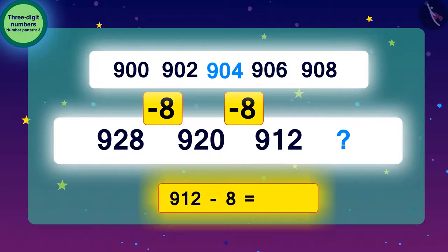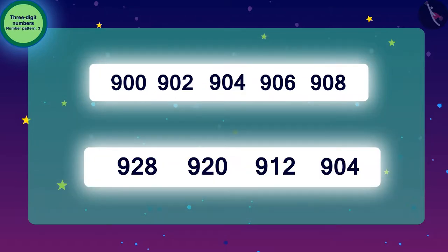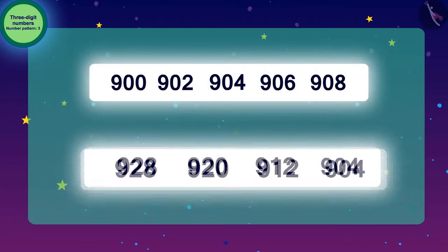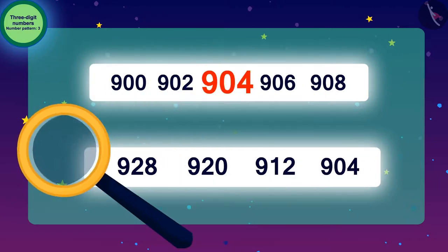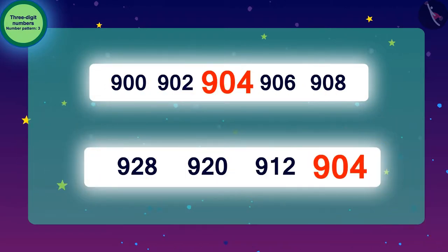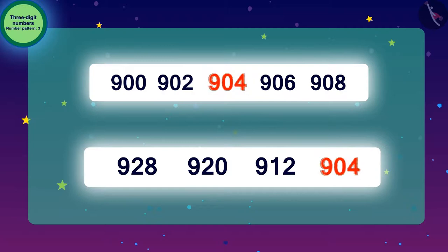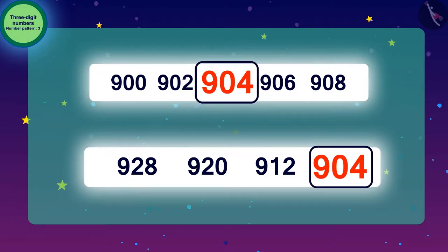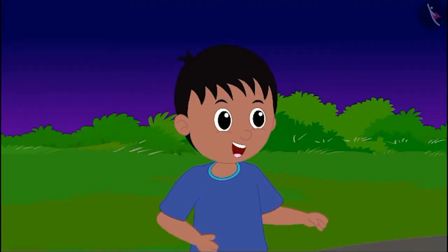The answer to our second code is found by subtracting 8 from 912, which gives 904. Our second pattern is also complete! Looking at both patterns together, we can see that 904 appears in both. So the answer to the alien's code is 904!